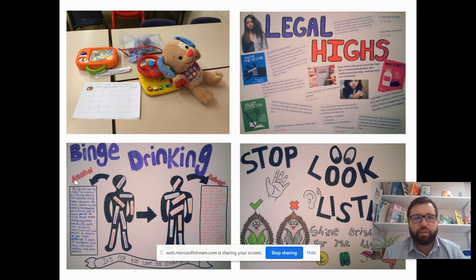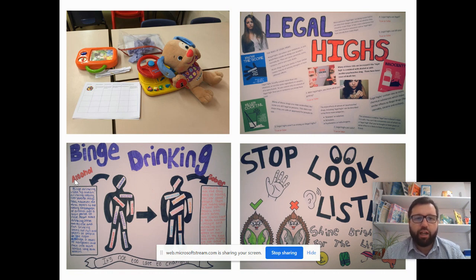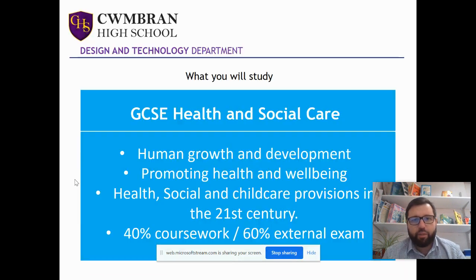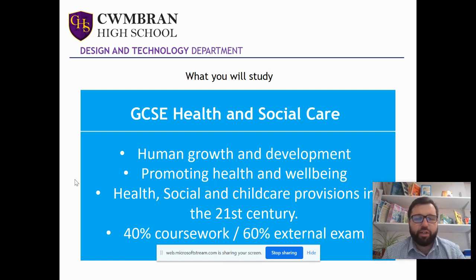Just some of the examples: studying how children develop using different toys for education and learning and fun, and then looking at campaigns to reduce things like taking drugs, binge drinking, road safety for children, etc. You'll be looking at human growth and development for all ages, promoting health and well-being to make sure we're fit and healthy adults, and looking at what provisions there are now in the 21st century.